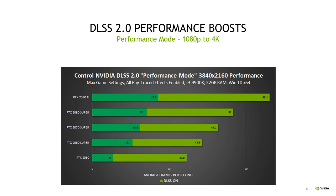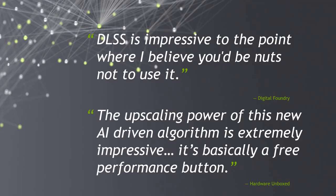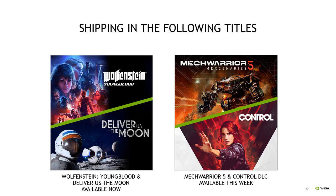We think what we've achieved is really impressive, and we're not alone. Digital Foundry says DLSS is "impressive to the point where I believe you'll be nuts not to use it." Hardware Unbox says "the upscaling power of this new AI-driven algorithm is extremely impressive — it's basically a free performance button." DLSS 2.0 is already shipping in Wolfenstein Youngblood and Deliver Us the Moon right now, and will be available in Control and MechWarrior 5 later this week.